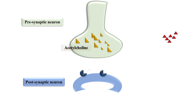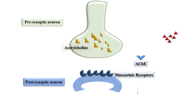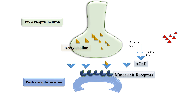Now, along with muscarinic receptors, we have an enzyme acetylcholinesterase. This enzyme has two sites: the esterotic site and the anionic site. Acetylcholine binds with both sites. The binding of acetylcholine with this enzyme causes degradation of the acetylcholine. This degradation causes termination of the action of acetylcholine, and there will be no parasympathetic effects.